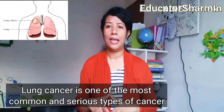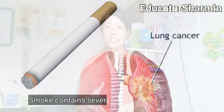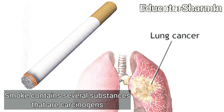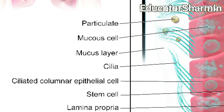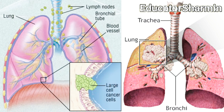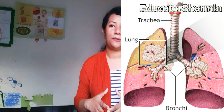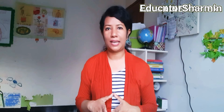Smoke contains several substances that are carcinogens. These carcinogens react directly, or via breakdown products, with DNA in epithelial cells to produce mutations, which are the first in a series of changes that lead to the development of a mass of cells. Remember the cell type: epithelial cells.